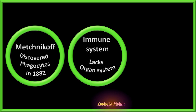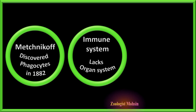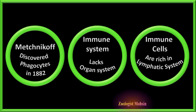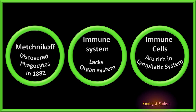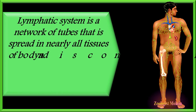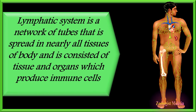The immune system lacks organ system level organization but has populations of cells that defend the body against pathogens. These immune cells are present throughout the whole body, but they are especially rich in a true organ system — the lymphatic system — which we shall learn today. The lymphatic system is a network of tubes spread in nearly all tissues of the body.